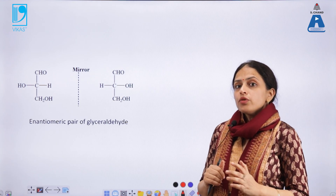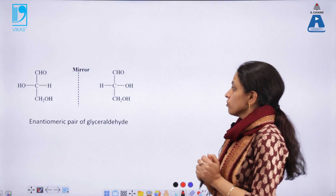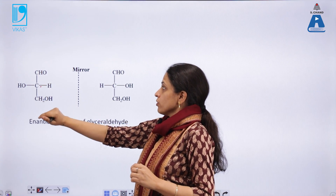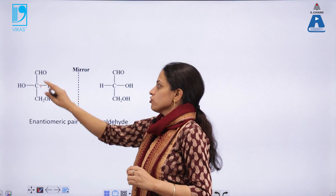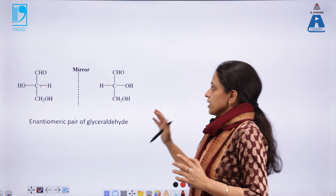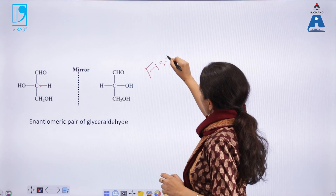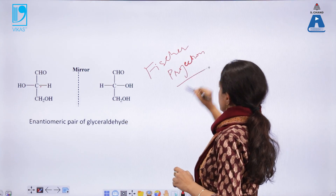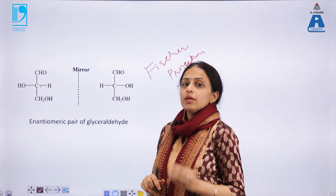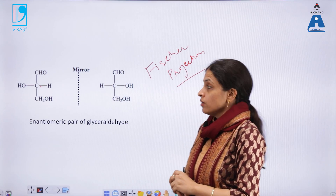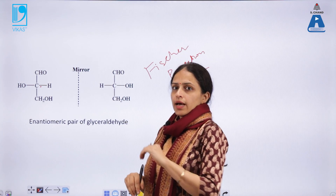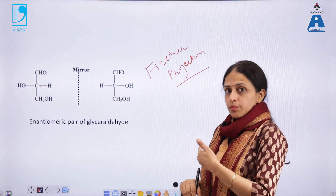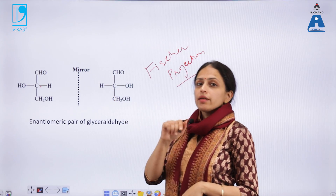The degree to which they rotate depends upon the concentration of the solution or the length of the polarimeter tube. This pair of glyceraldehyde is shown with carbon at the center, CHO at the top, CH2OH at the bottom, and H and OH on the horizontal line. This representation is called a Fischer projection. In Fischer projections, groups on the horizontal line are in the plane of the paper, the group going down is inside the plane, and the group at the top is outside the plane of the paper.